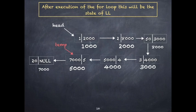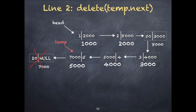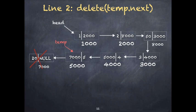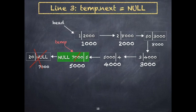After the for loop exits, temp is pointing to the second-last node. We stop here because if we were at the last node and removed it, we couldn't set the previous node's pointer to null. Then we delete temp.next — that is, the node at location 7000. Finally, we set temp.next equal to null to properly mark the end of the linked list.